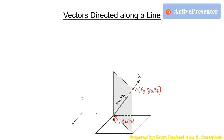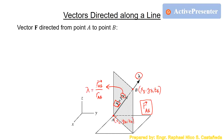In calculating the unit vector of force vector F, we use the position vector R measured from point A to point B. Since the unit vector lambda is equal to both the position vector R and force vector F in direction, the unit vector for the force vector equals position vector RAB divided by its magnitude. So force vector F equals its magnitude times the unit vector directed from A to B, where that unit vector is replaced with the ratio of RAB and its magnitude.